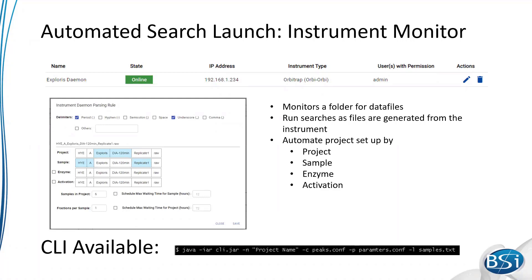One solution we have is the instrument daemon, or PEAKS instrument monitor. This connects directly to your instrument and gives you the ability to start jobs as they come off the mass spec. It looks at a certain folder and detects when new raw files arrive. You can configure it to look for certain details of the raw file names — for example, the sample name, project name, and even the enzyme and activation mode from the data file. Then you can tell it how many samples to wait for before starting a Peaks run. Once it sees, say, six mass spec files, it will start a new job. You can set this overnight and hopefully come back to Peaks results in the morning.